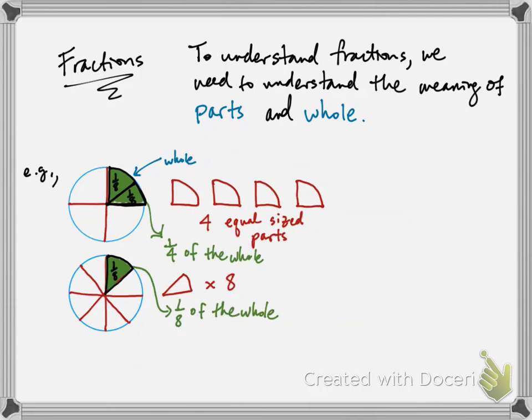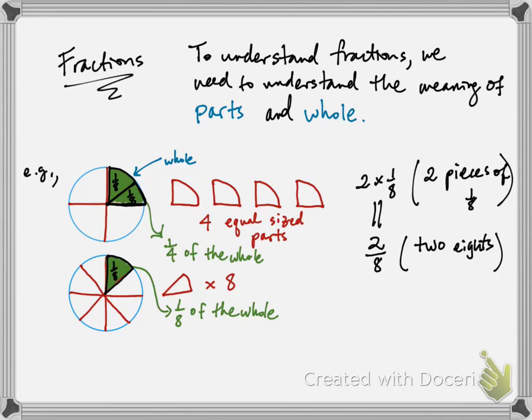This is why two times one-eighths, which is like taking two pieces of one-eighths, which can also be written as two-eighths, is exactly the same as one-quarter or one-fourth. In this case, two-eighths and one-fourth are called equivalent fractions, and which representation you use depends on the context of the problem.